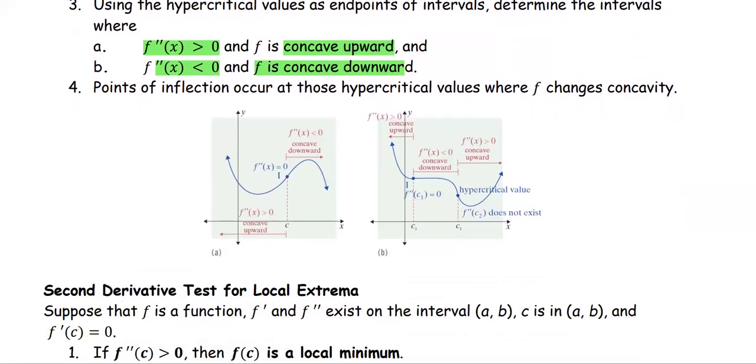The point of inflection occurs at those hypercritical values where f is changing the sign of the second derivative, or changing from concave up to concave down or concave down to concave up.